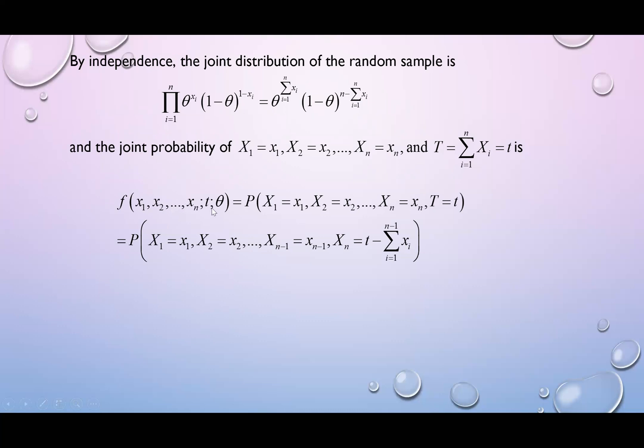If we have the joint pdf f, and also the sufficient statistic T, so it can be written as probability X1 equals to x1, X2 equals to x2, Xn equals to xn, and T equals to t. Note that T is equal to summation Xi, which is x1 plus x2 plus xn. So X1 equals x1, X2 equals x2, Xn minus 1 equals to xn minus 1, and then Xn is equal to T minus summation Xi, where your i is equal to 1 up to n minus 1.